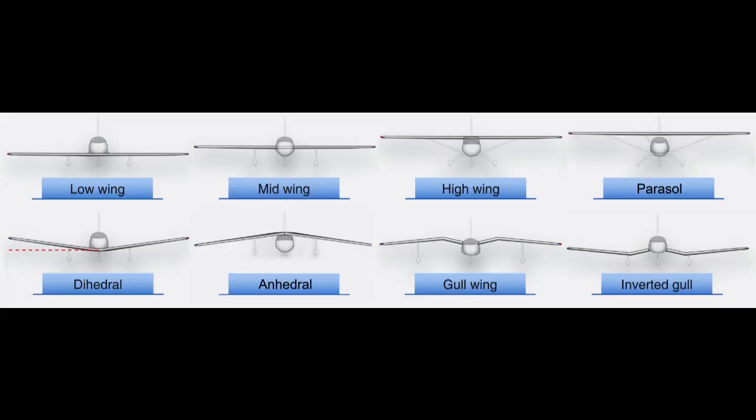The wings of an aircraft can be attached to the fuselage at the top, mid-fuselage, or at the bottom. They may extend perpendicular to the horizontal plane of the fuselage or can angle up or down slightly. This angle is known as the wing dihedral. The dihedral angle affects the lateral stability of the aircraft.